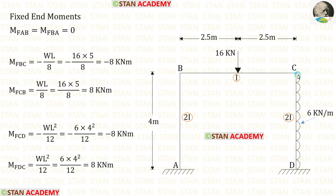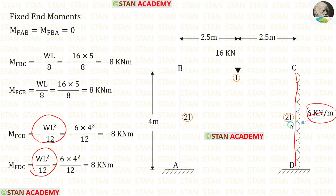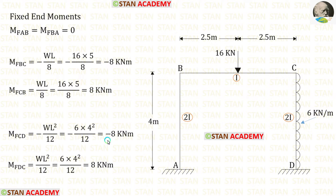Now let us find the fixed end moments in column CD. In column CD, we have a uniformly distributed load of 6 kN per meter acting over the full length. The formulas are minus WL²/12 and positive WL²/12. Here W is 6 and L is 4. After the calculation, for M_CD we get minus 8 and for M_DC we get 8.